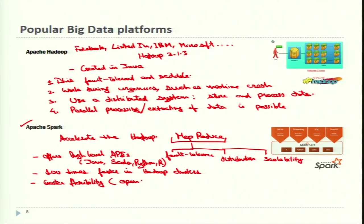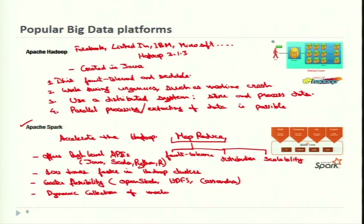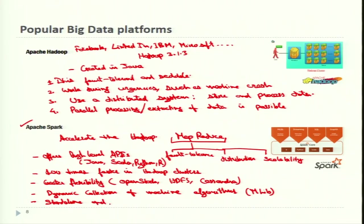Spark can work with various data sources including OpenStack, HDFS, and Cassandra. It has a dynamic collection of machine learning algorithms — including clustering, collaborative filtering, classification, and regression — offered through the MLlib library found in Spark. It can be used as a standalone on Hadoop or Apache Mesos, or various other platforms, and cloud versions are also available.